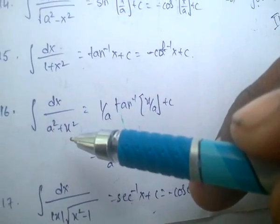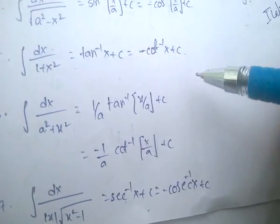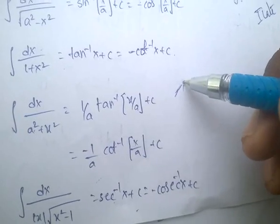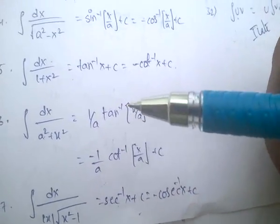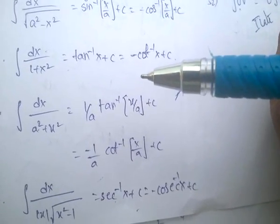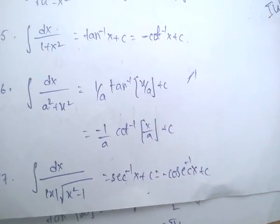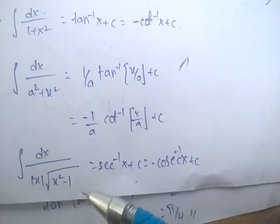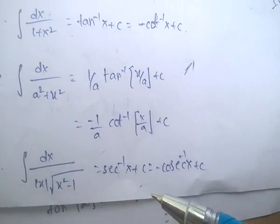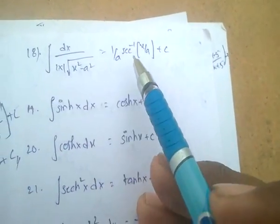Integral of 1 by (a² plus x²) equals (1/a) tan inverse of x/a plus c. In case of integration, the constant before the variable is divided — whereas in differentiation it is multiplied. Integral of 1 by (|x| root of x² minus a²) equals sec inverse of x, or minus cosec inverse of x. The corresponding formula with 'a' gives (1/a) sec inverse of x/a.